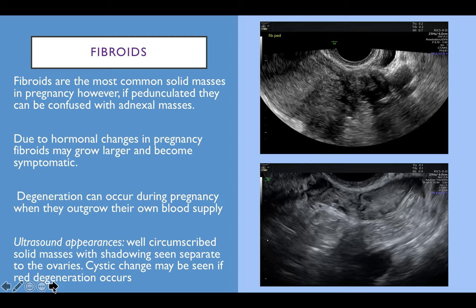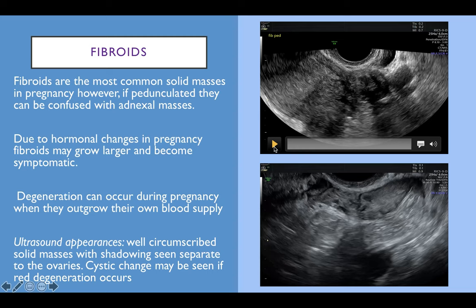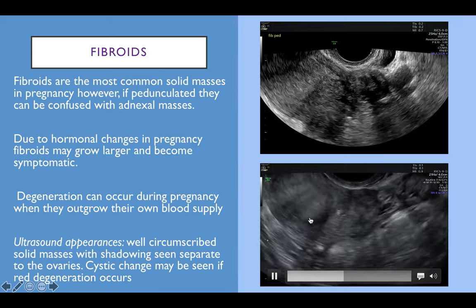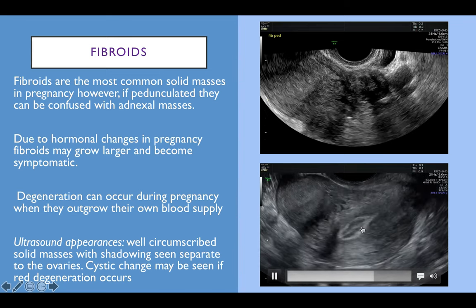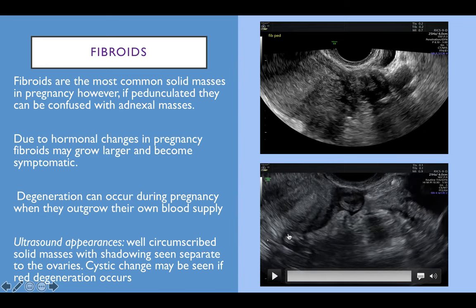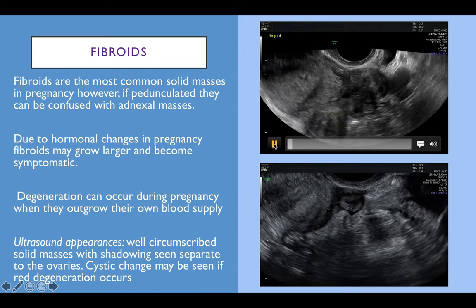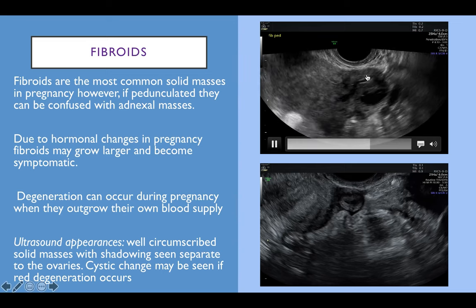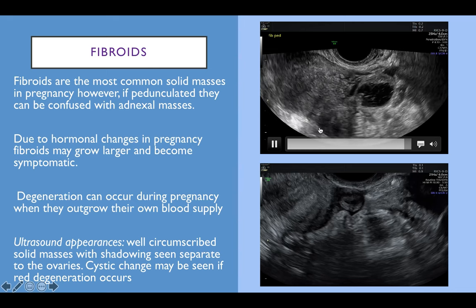Fibroids are the most common solid masses in pregnancy; however, if pedunculated they can be confused with adnexal masses and in early pregnancy with ectopic pregnancies. Due to hormonal changes, fibroids can grow large and become symptomatic, particularly if they undergo red degeneration when they outgrow their own blood supply and become significantly tender. The ultrasound appearance is of a well-defined solid mass with shadowing seen separate to the ovaries, sometimes with cystic changes. Here we have an ovary and an adnexal mass — coincidentally there was also a very small ectopic pregnancy just next to it, with the uterus showing no sign of intrauterine pregnancy. This patient had two small fibroids, including a subserous fibroid at the top and a smaller one that was thought initially to be an ectopic pregnancy.